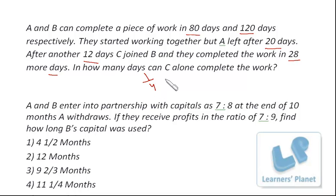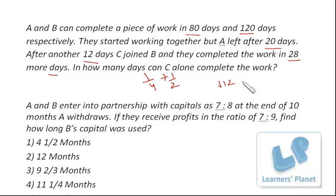One-fourth of the work is done by A, and half of the work is done by B. That means three-fourths of the work has been done by A and B. So the remaining one-fourth of the work has been done by C. Now C is working for 28 days and doing one-fourth of the work. That means C can do one-fourth of the work in 28 days, so the entire work he can do in 28 multiplied by 4, that is 112 days.